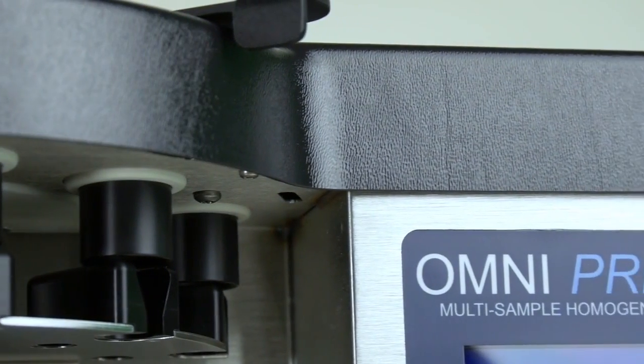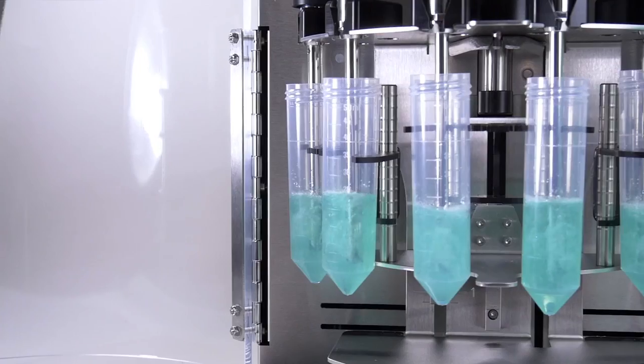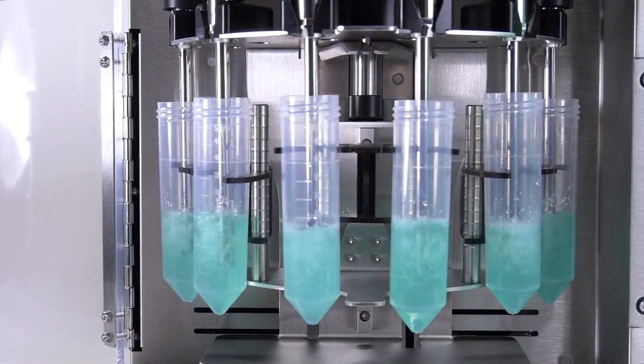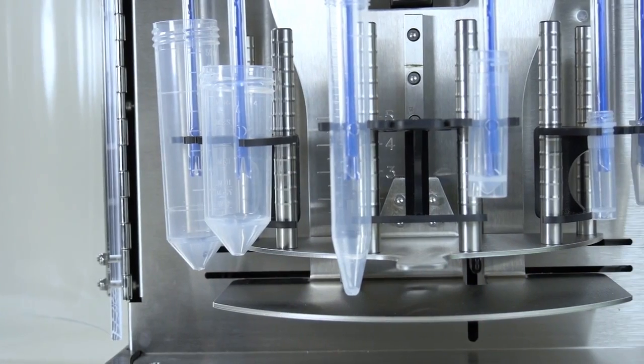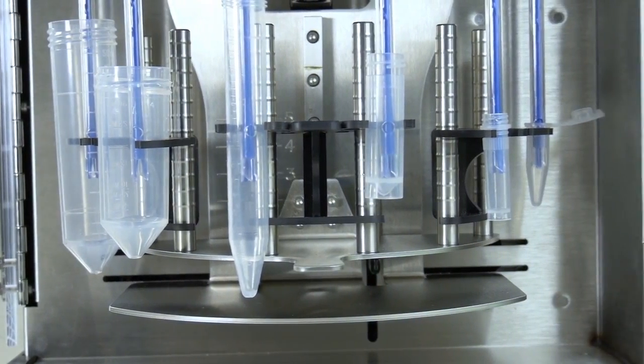The OmniPrep 6 is an automated homogenizing workstation that can simultaneously process up to 6 samples per cycle in volumes ranging from 1.5ml to 50ml.